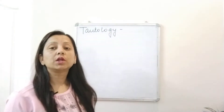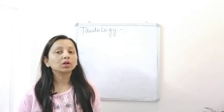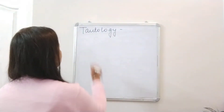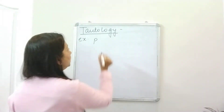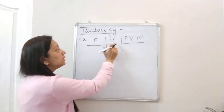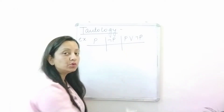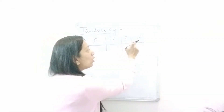So what is tautology? A tautology is a compound proposition which is always true. To show what a tautology is, suppose I have a proposition p and the negation of p, which is called not p, and then a compound proposition that is p or not p. This is the proposition, this is the negation, and this is my compound proposition which says p or not p.